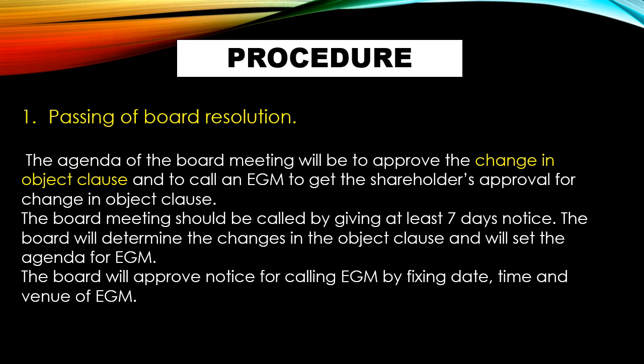In the board meeting, the proposal to alter the object clause will be passed, and then an extraordinary general meeting (EGM) will be called to get the shareholders' approval. Since altering the object clause requires shareholders' approval, the board meeting will draft the EGM notice and fix the date, time, and venue for when the EGM will be conducted.